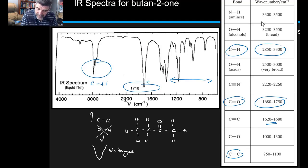But what about the carbon-oxygen bonds between 1000 and 1300? It's sort of hard to detect what's going on here.